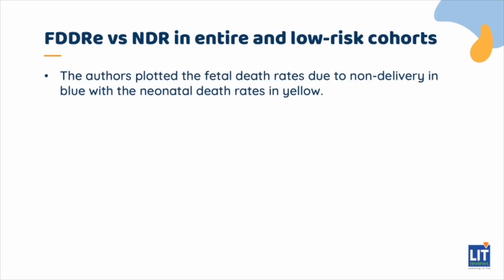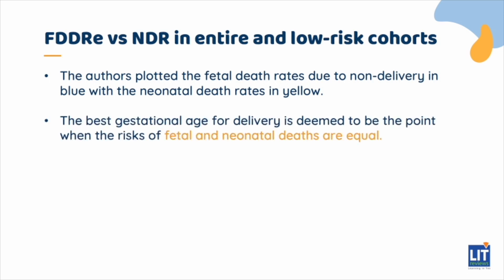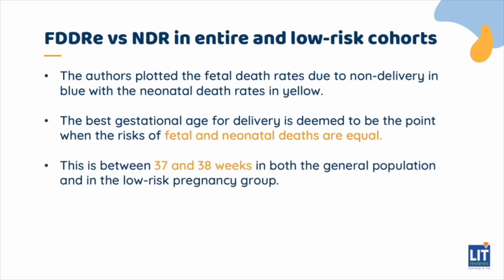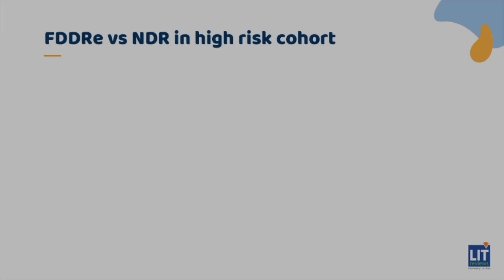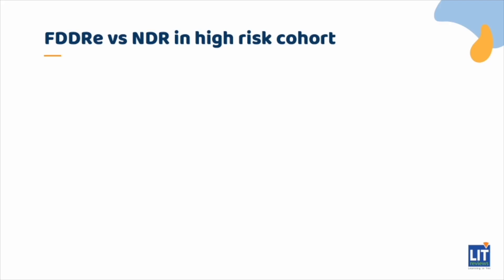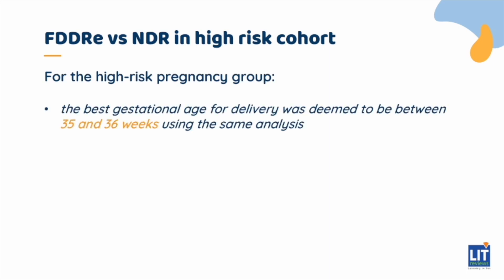The authors plotted the fetal death rates due to non-delivery in blue with the neonatal death rates in yellow. The best gestational age for delivery is deemed to be the point when the risks of fetal and neonatal deaths are equal. This is between 37 and 38 weeks in both the general population and in the low-risk pregnancy group. As for the high-risk pregnancy group, the best gestational age for delivery was deemed to be between 35 and 36 weeks using the same analysis.